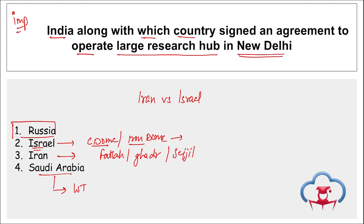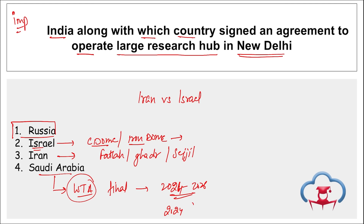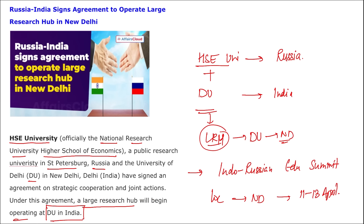Regarding Saudi Arabia, the World Tennis Association (WTA) Finals will be held in Saudi Arabia from 2024 till 2026 — that is the 2024, 2025, and 2026 editions. India and Russia signed an agreement to operate a large research hub in Delhi. From Russia, it was HSE University, and from India, it is Delhi University.